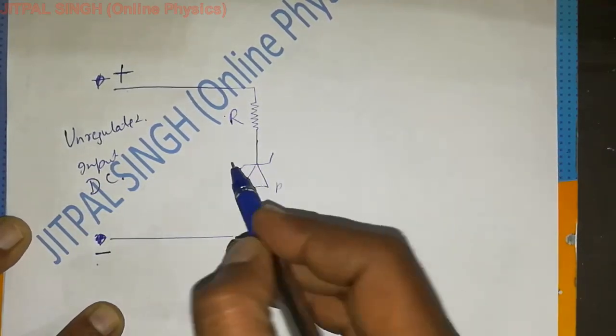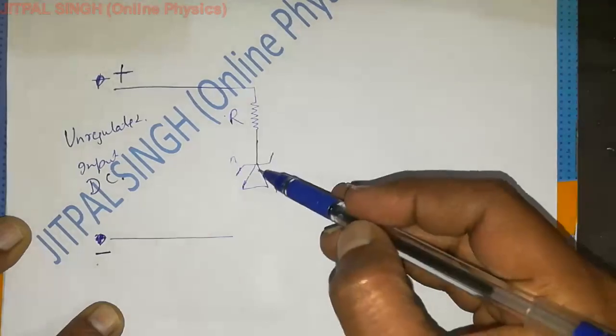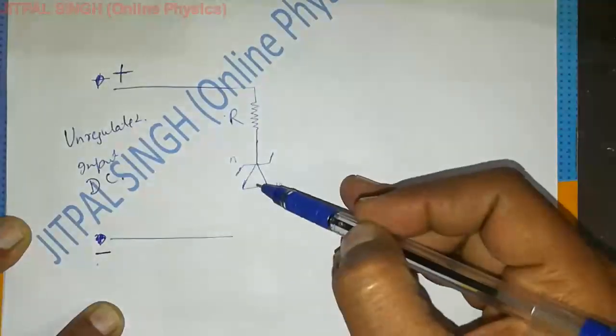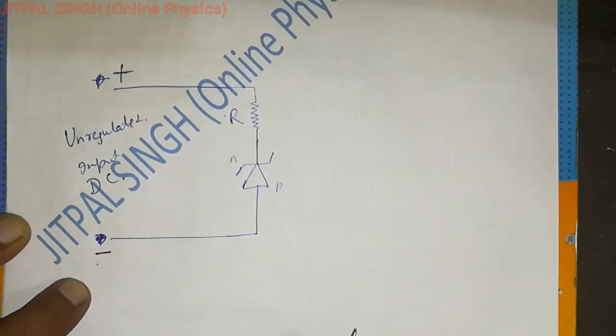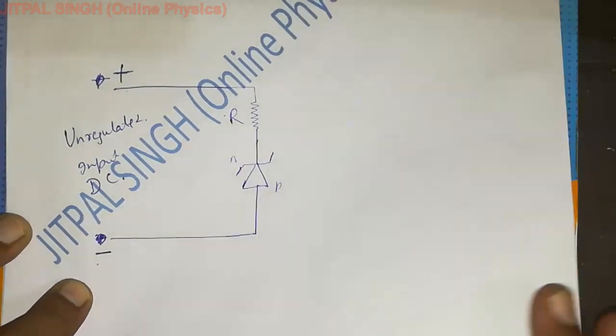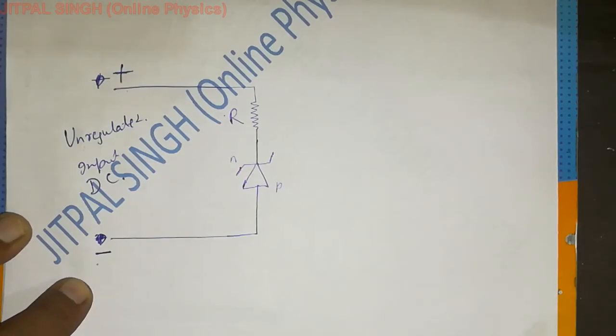Z, this is P, this is N. Check. N is connected to positive and P is connected to negative. P is connected to negative. So here we are using it in reverse bias.